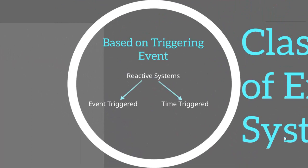The fourth and final classification criteria is based on the triggering event. Based on the triggering event, we can classify embedded systems as either event-triggered or time-triggered. Time-triggered embedded systems operate at fixed intervals of time, whereas event-triggered systems depend on the user to perform an activity, and based on that the system would react appropriately.